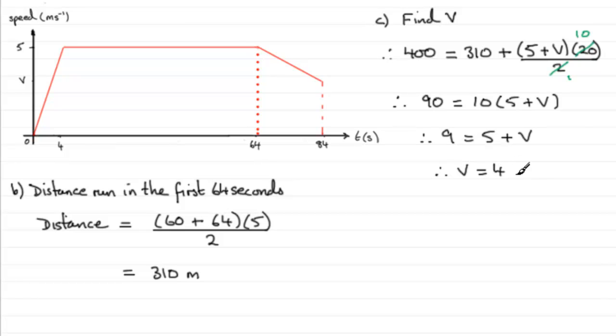So there you go, V is 4, or 4 meters per second is the speed that the girl crosses the finishing line with.